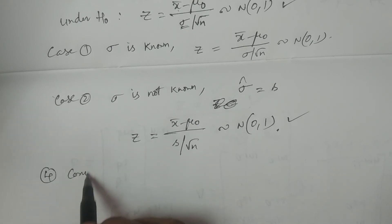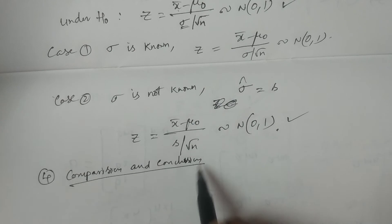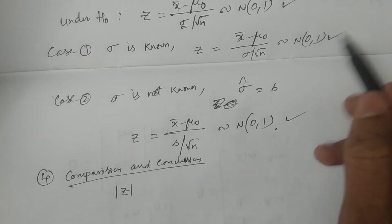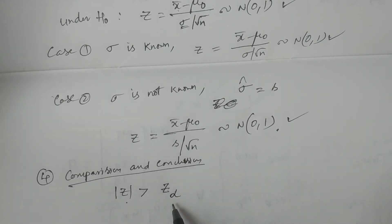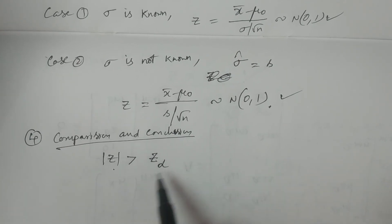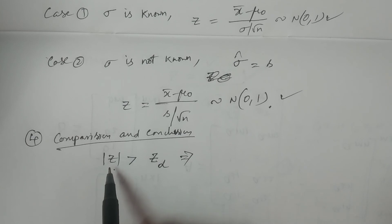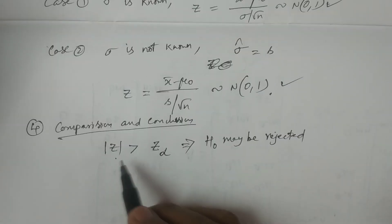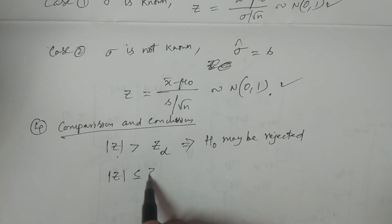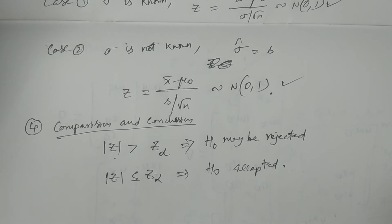The fourth part is comparison and conclusion. Whether it is Case 1 or Case 2, you calculate the modulus of z and compare it with the tabulated value at the specified level of significance alpha — whether it is 5 percent or 1 percent. If the calculated value is greater than z_alpha, then H₀ may be rejected. Otherwise, if modulus of z is less than or equal to z_alpha, then H₀ is accepted.